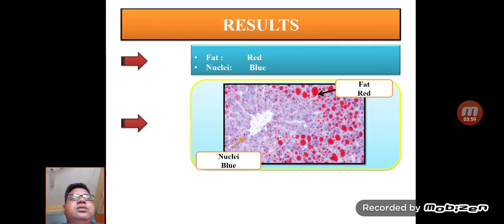For the results, in the histopathology section, the fat appears red and nuclei are stained blue. This is a typical stain by which you can demonstrate fat in tissue sections.